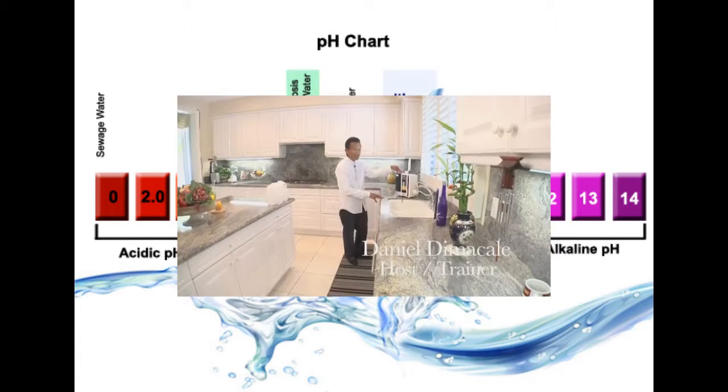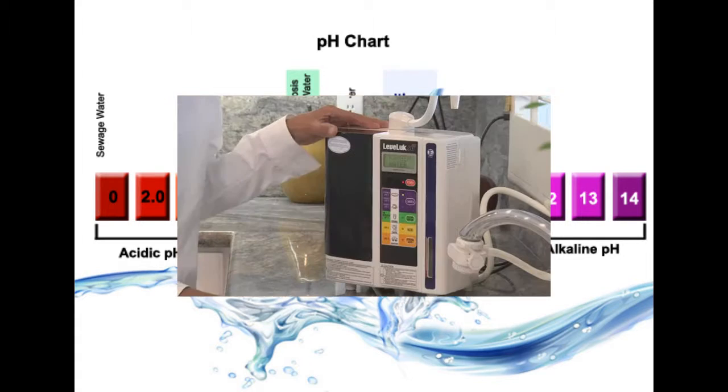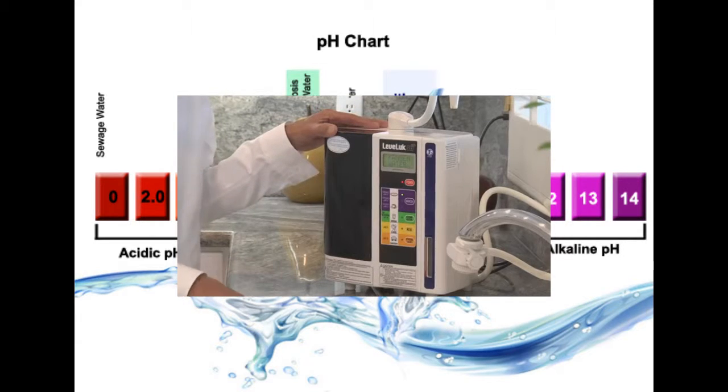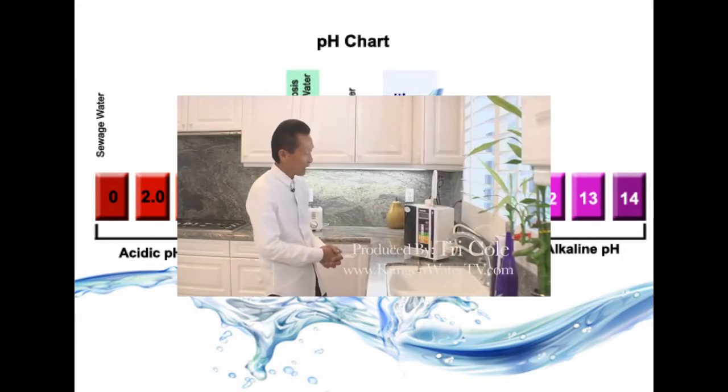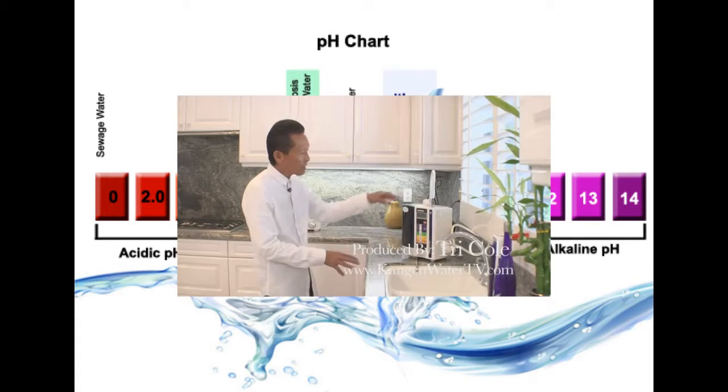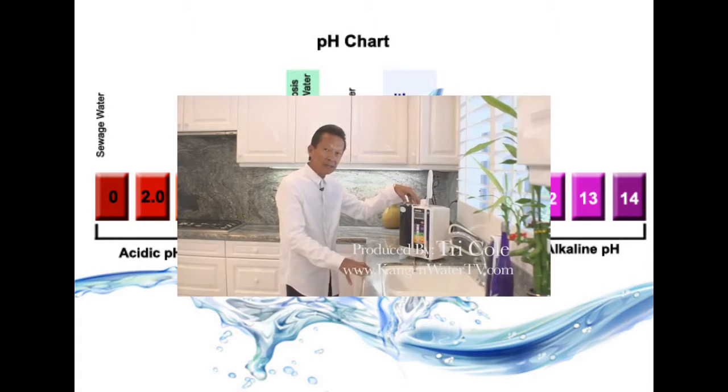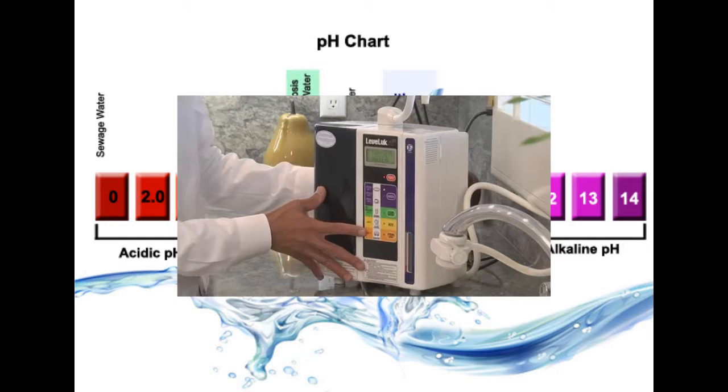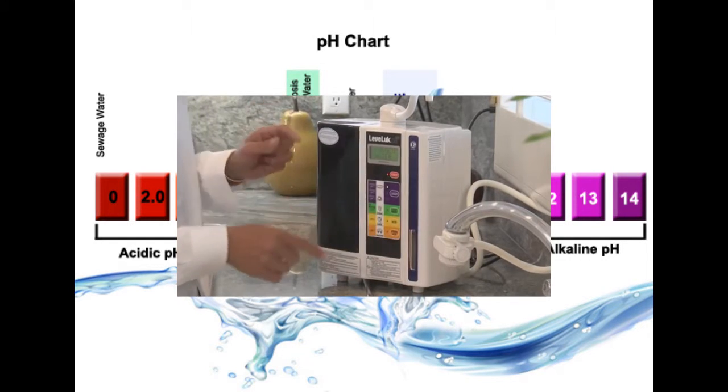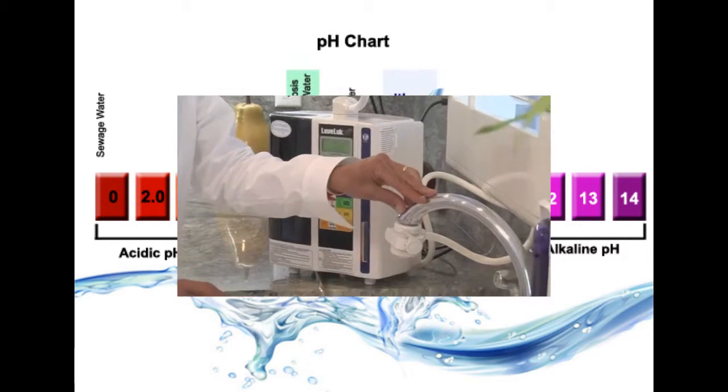What we're looking at here is the flagship product of Enagic, the SD501. Now this is an actual installation in the kitchen and to install this unit it takes about 10 to 15 minutes. It can be installed in any type of faucet in the kitchen.